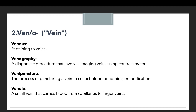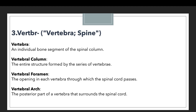Now let's move to the third and last prefix for this session, which is vertebra. Vertebra means vertebra or spine. Whenever there is a discussion around the spine, you can use the prefix vertebra. The first example is vertebra itself, which means an individual bone segment of the spinal column. The second example is vertebral column, which means the entire structure formed by a series of vertebrae — when multiple vertebrae combine and form a structure, we call it the vertebral column.